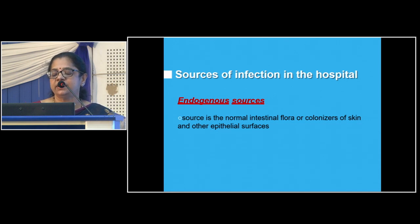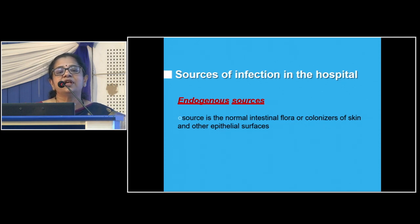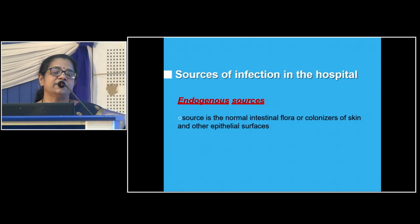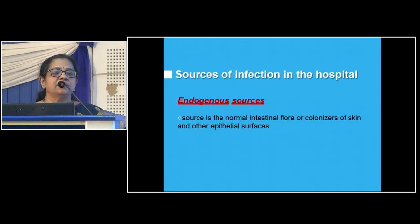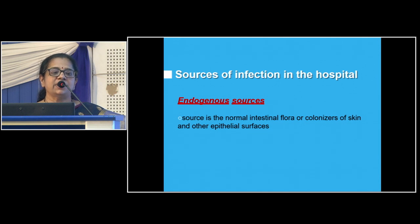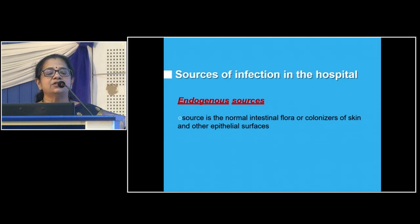Endogenous sources include normal intestinal flora or colonization of the skin. We normally colonize organisms like Candida albicans; when immunosuppressed, Candida can turn into a pathogen and cause systemic candidiasis. Similarly, even MRSA in our hands does not affect us normally, but with immunosuppression it causes infections including meningitis, lung abscess, staphylococcal osteomyelitis, and septicemia. All these infections can occur as endogenous sources.